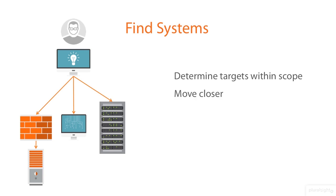The closer you are to the target, the fewer restrictions there are to impede your discovery. If you are scanning from across the internet, you'll encounter router ACLs, firewall rules, intrusion prevention systems, load balancers, and traffic shaping along the path. These systems restrict access or limit the information you can gather. If we are operating from inside the organization's network, then there are likely fewer restrictions on access. If you are on the same local network, there may just be a software-based firewall on the target, or maybe nothing at all. If at all possible, move closer to the target.